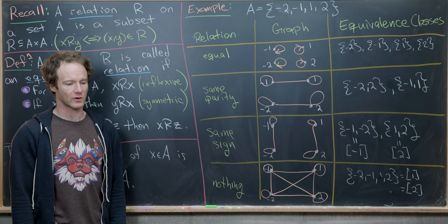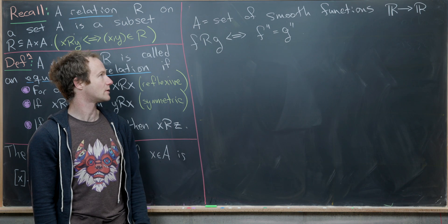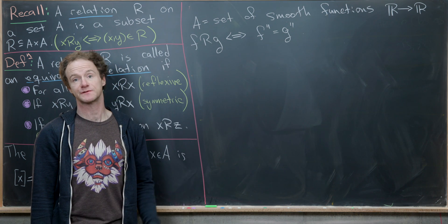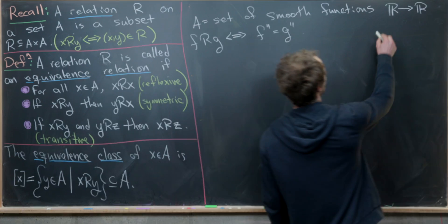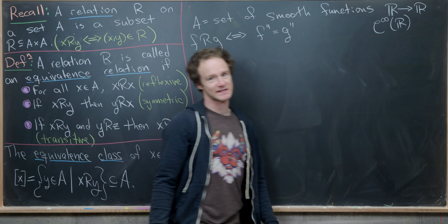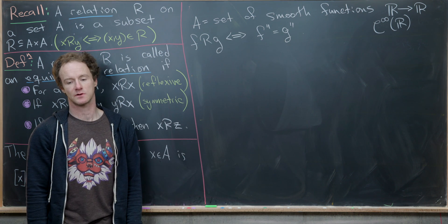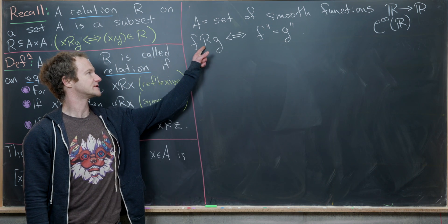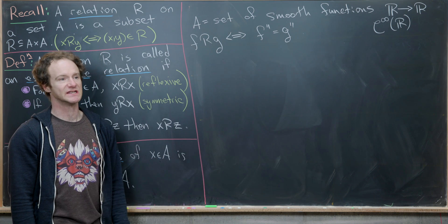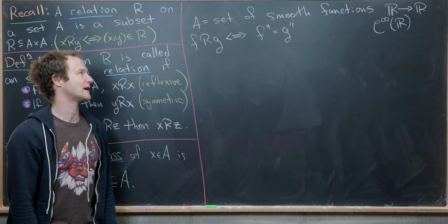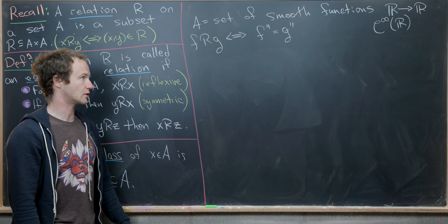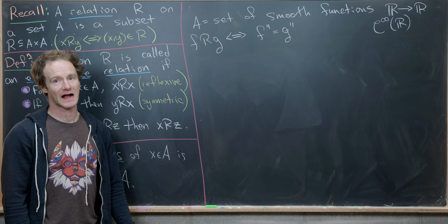For our next example, we let A be the set of smooth functions from the real numbers to the real numbers, denoted C-infinity, meaning they are infinitely differentiable. We say that F is related to G if and only if F double prime equals G double prime. There's not much to check about this being an equivalence relation, since it is built on the back of equality.